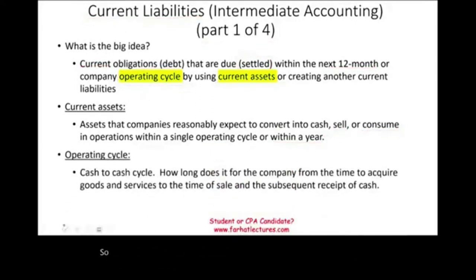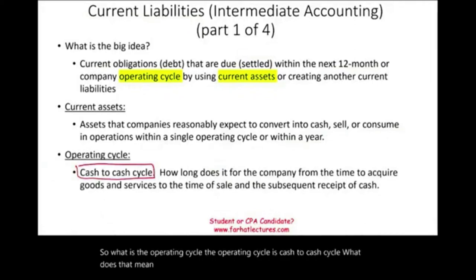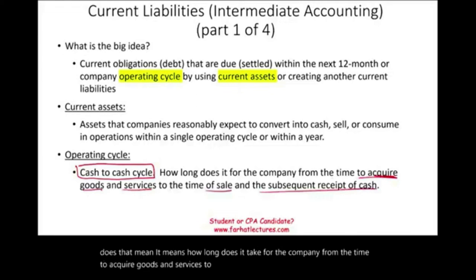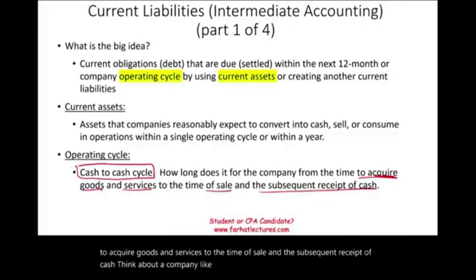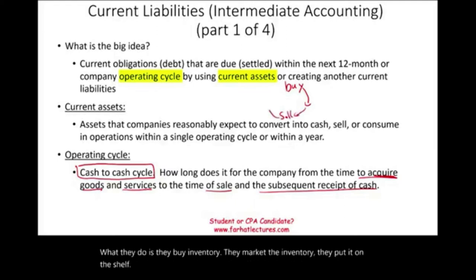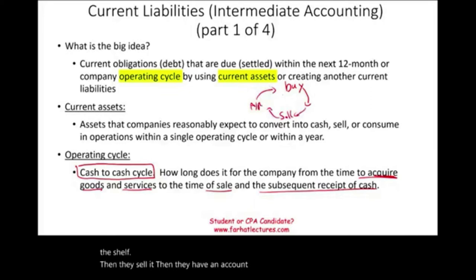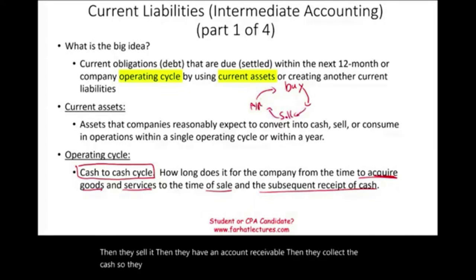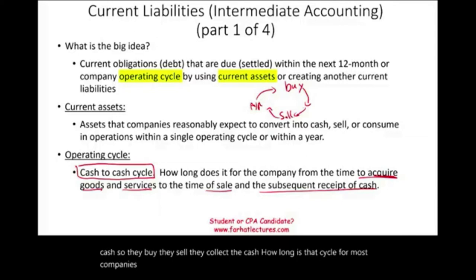The operating cycle is the cash-to-cash cycle — how long does it take for a company from the time it acquires goods and services to the time of sale and the subsequent receipt of cash. Think about a retailer like Walmart: first they buy inventory, they put it on the shelf, then they sell it, then they have an account receivable, then they collect the cash. For most companies, this cycle is less than a year, so we assume it's one year.